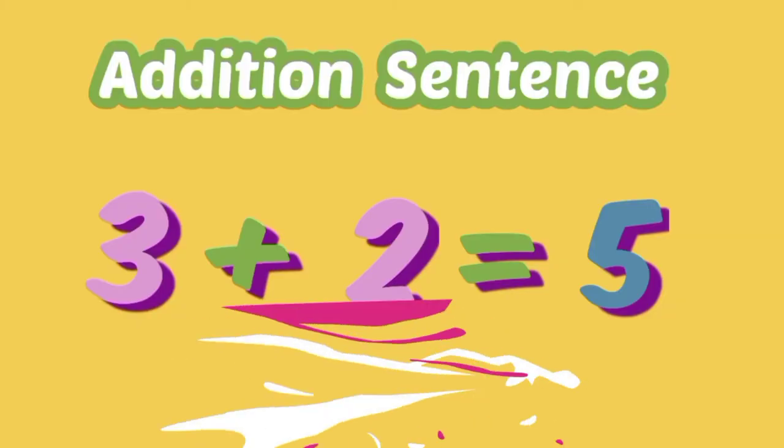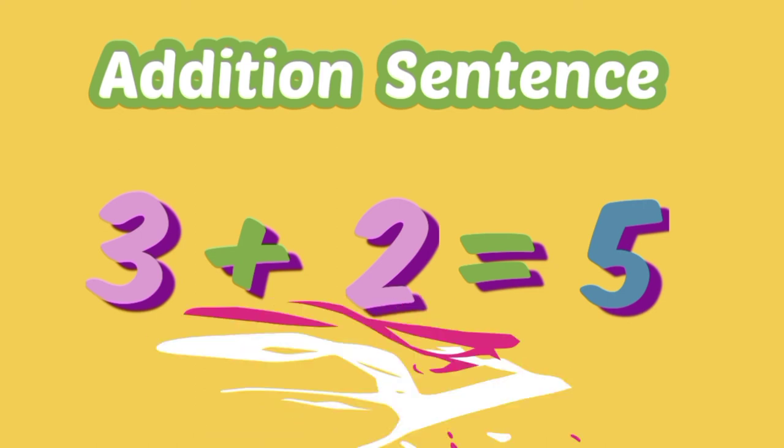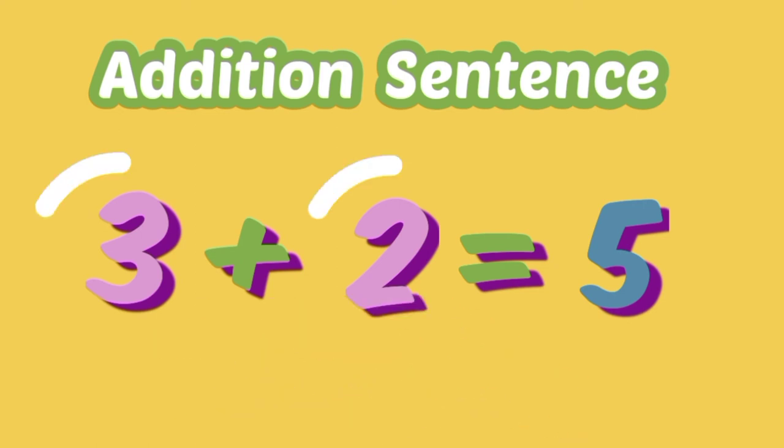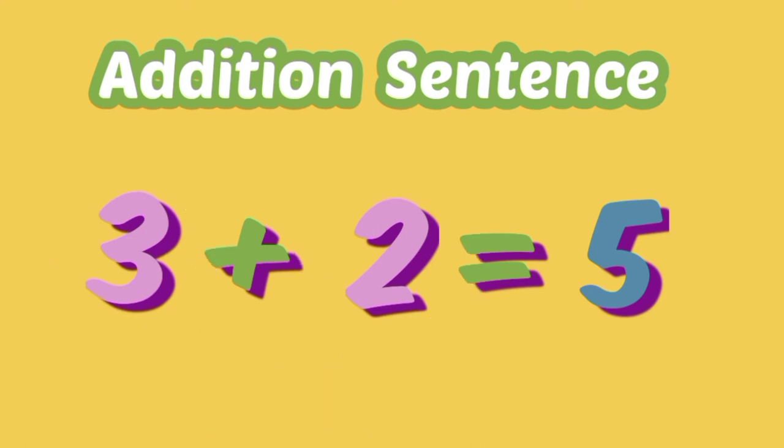This is an addition sentence. 3 plus 2 equals 5. We call the numbers that we add together addends. The answer in addition is called the sum. We use the plus sign when we add.